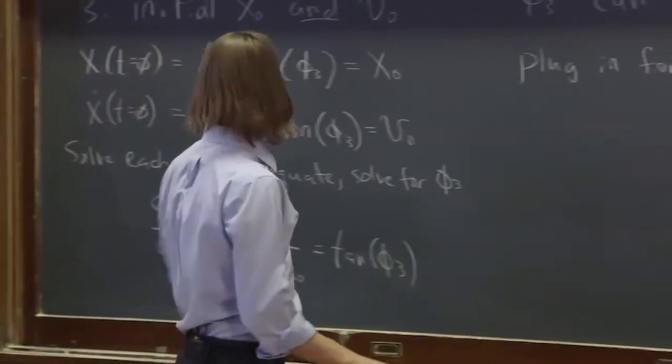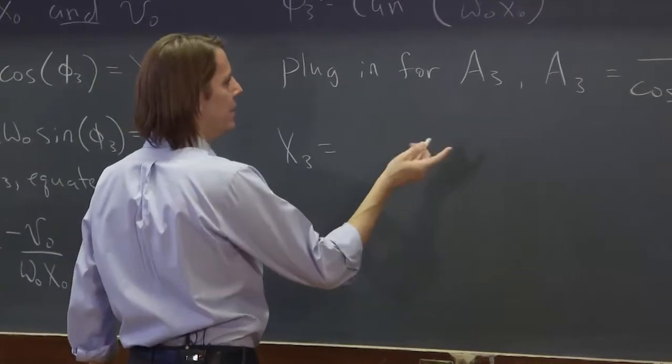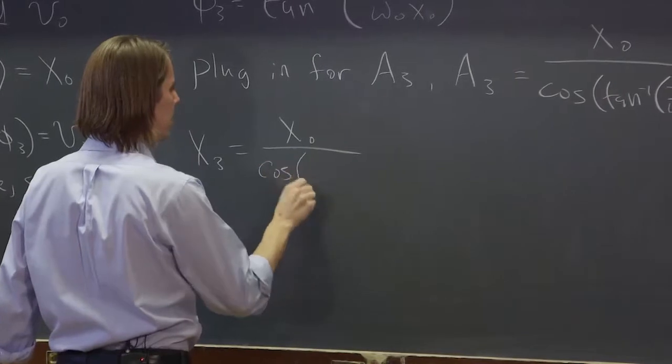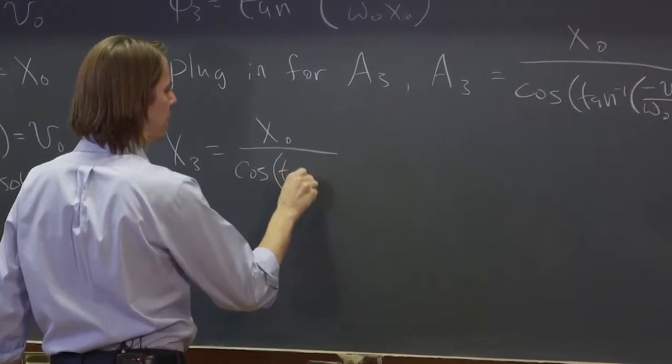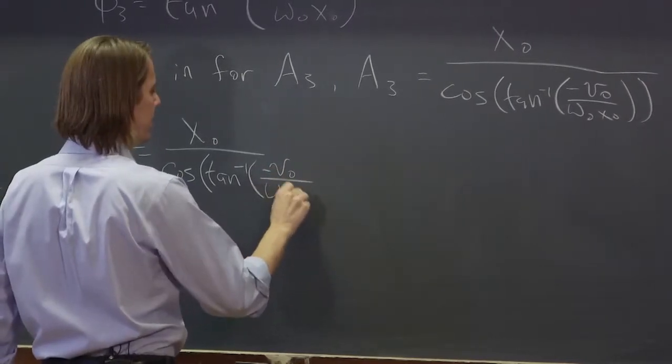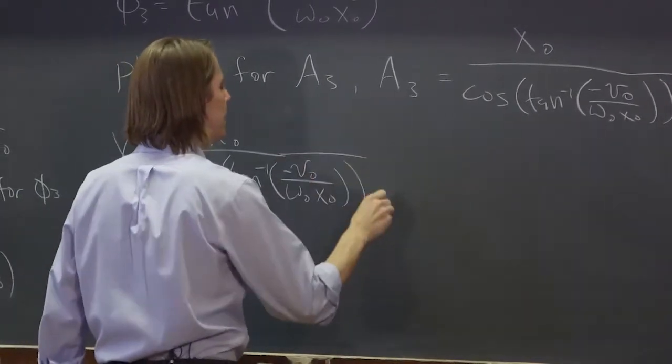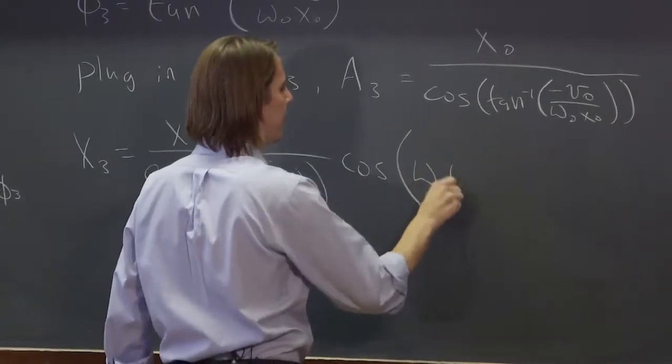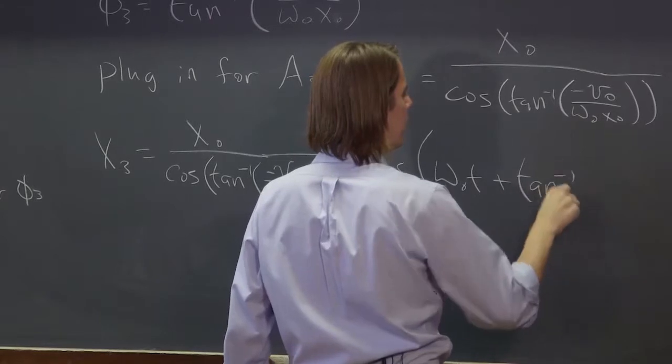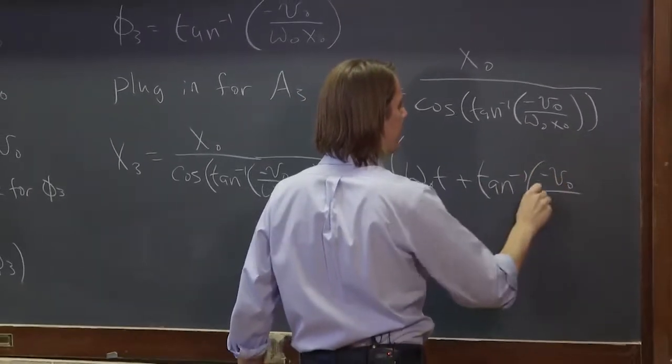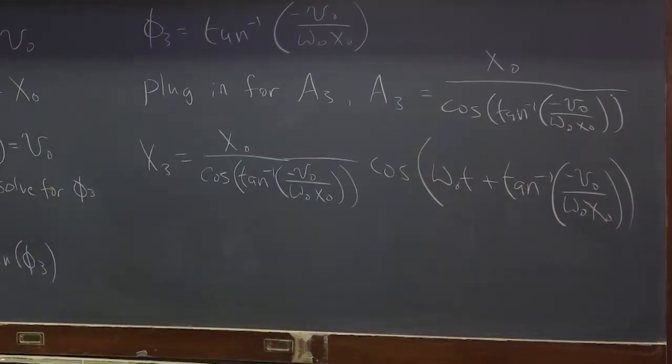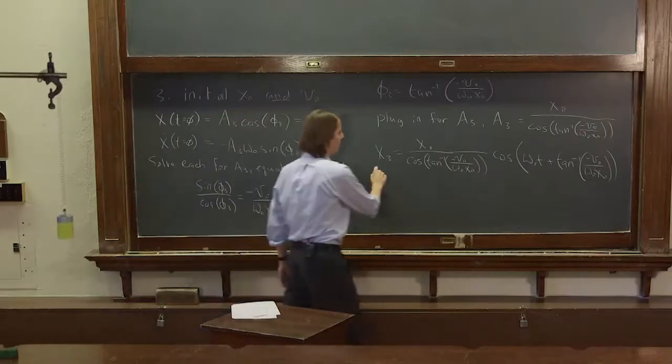And if you think that looks ugly, look at this. x3 then is equal to the amplitude x-naught over the cosine of the inverse tangent of minus v-naught over omega-naught x-naught times the cosine of omega-naught t plus phi 3, which is the inverse tangent of minus v-naught over omega-naught x-naught. Is that everything? There it is. There's a solution for x3.